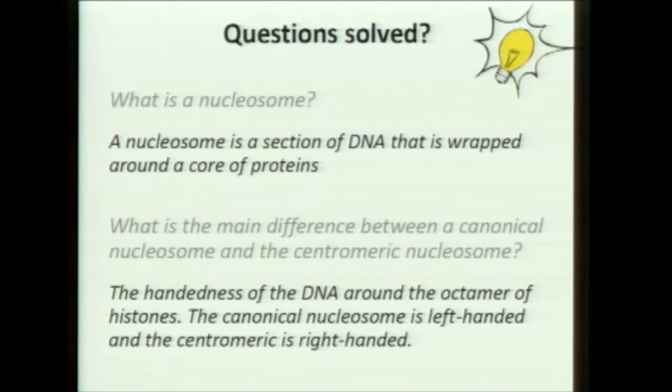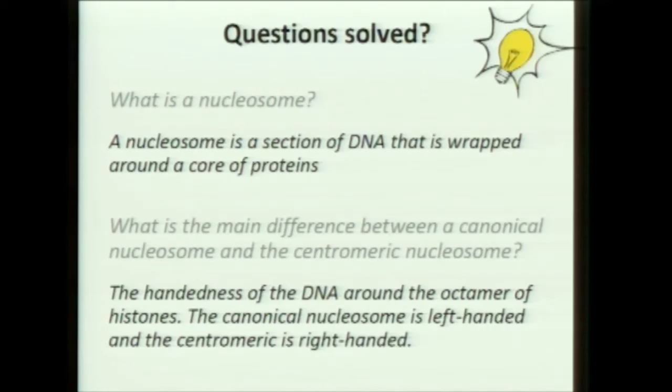Just the answers to the questions I posed at the beginning: What is a nucleosome? A nucleosome is a section of DNA that is wrapped around a core of histones. And what is the main difference between a canonical nucleosome and a centromeric nucleosome? It would be the wrapping of the DNA. Thank you very much.